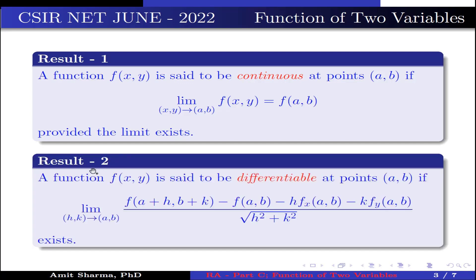Result number 2: a function f(x,y) is said to be differentiable at point (a,b) if the limit as (h,k) approaches (0,0) of [f(a+h, b+k) − f(a,b) − h·fₓ(a,b) − k·f_y(a,b)] divided by √(h² + k²) exists.